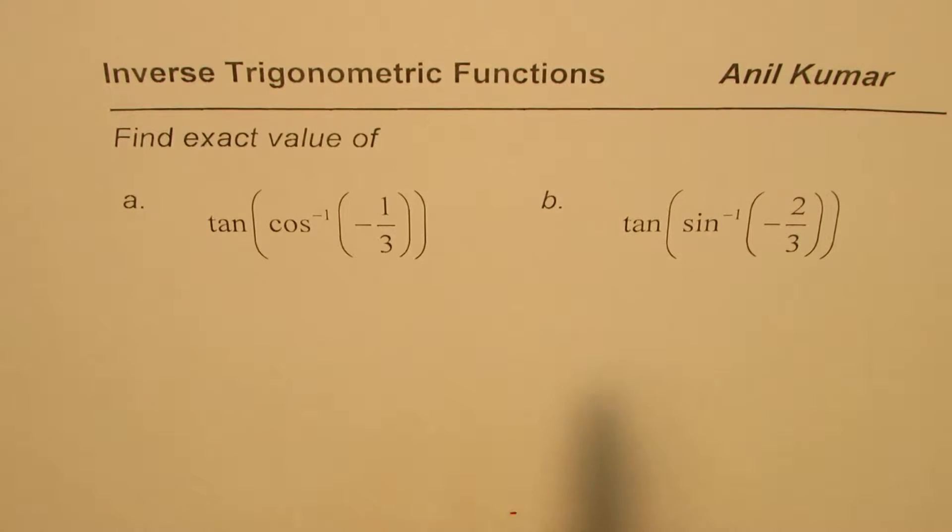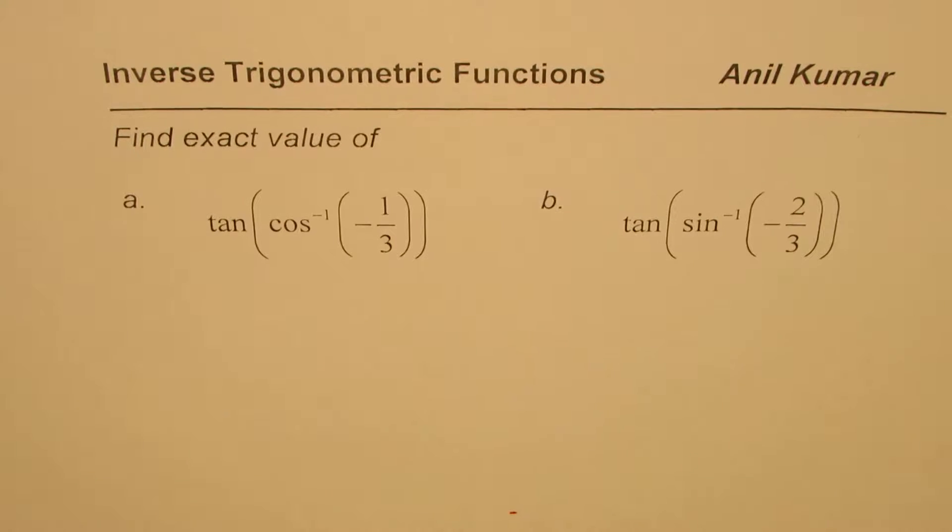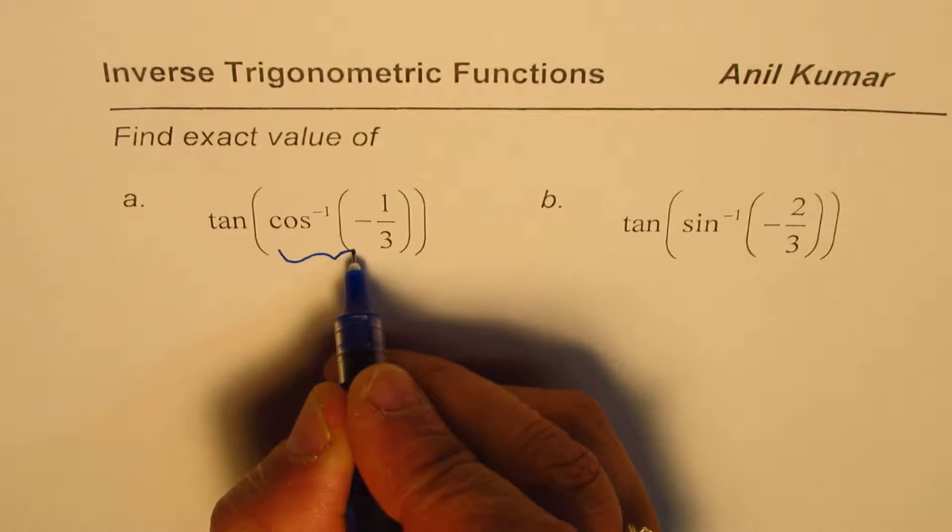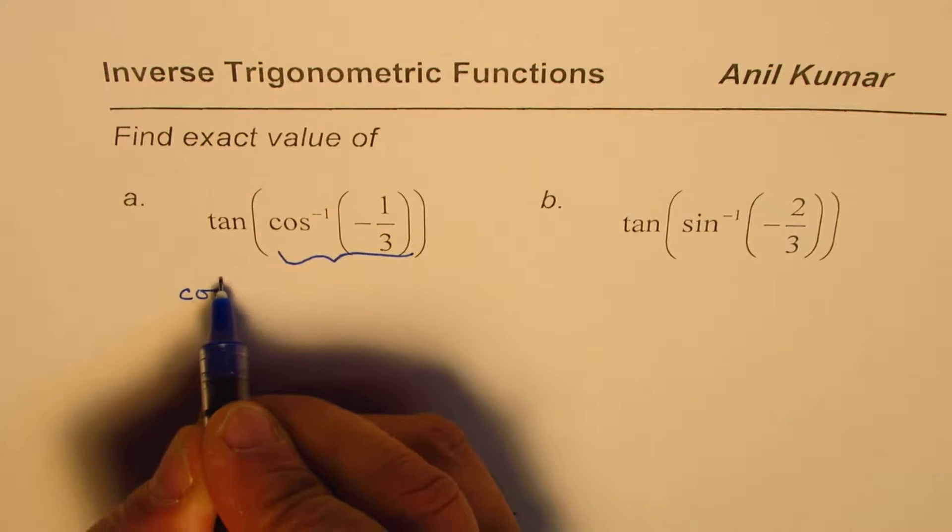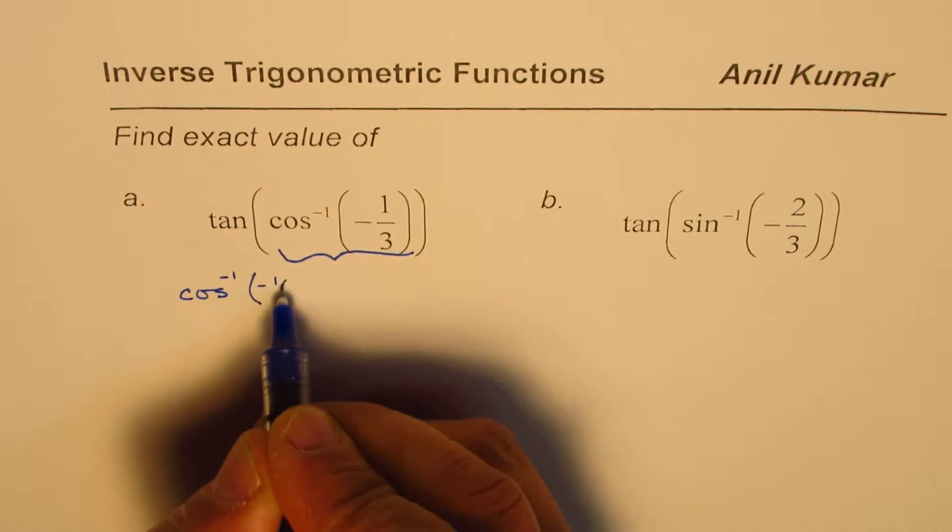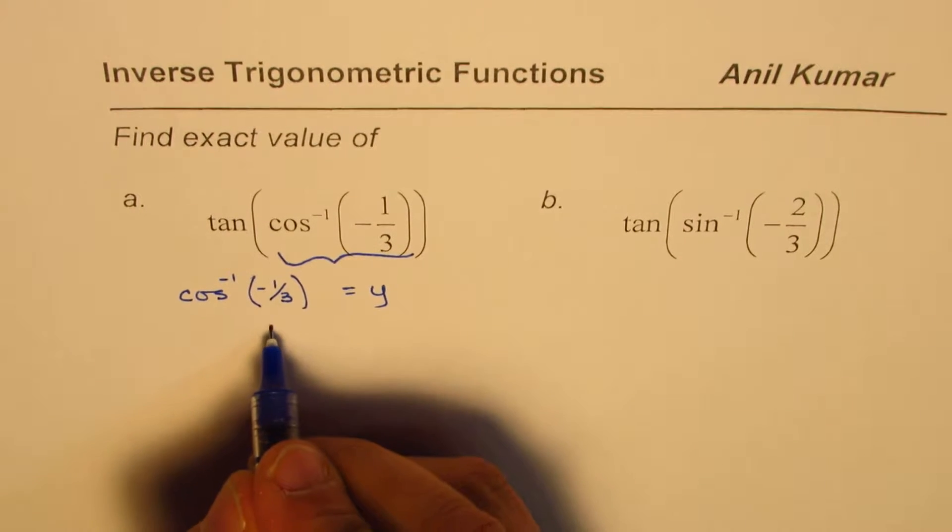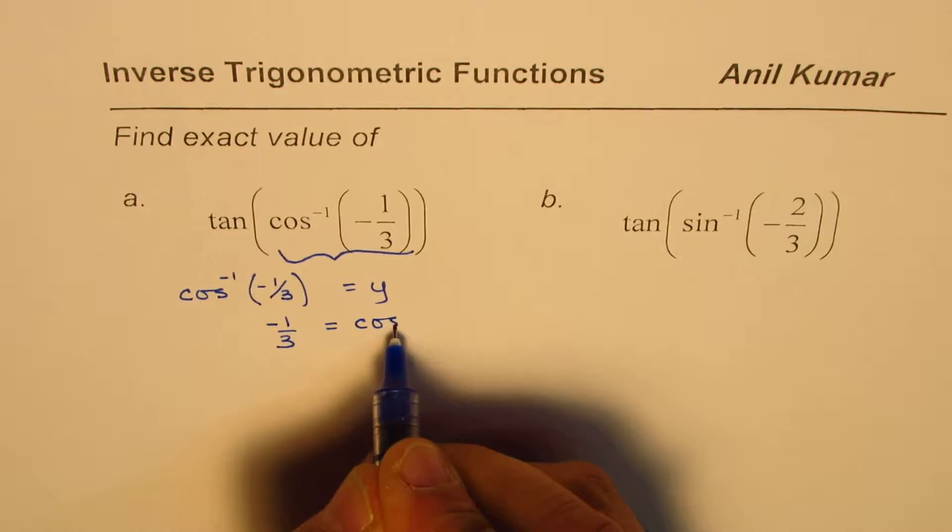Let's begin by understanding what is inside: cos^(-1)(-1/3). That is the first part we'll look into, and then we'll move on. So we have cos^(-1)(-1/3). Let this be equal to y. So in that case, -1/3 will be equals to cos(y).